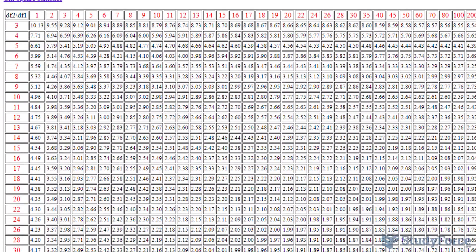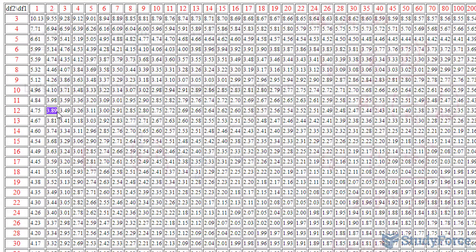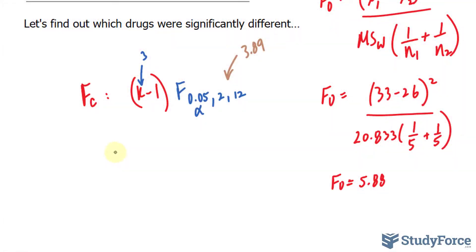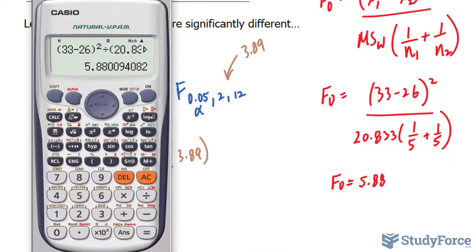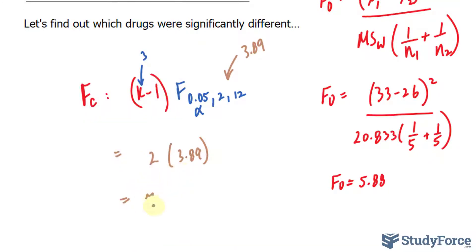So you have to find this number out in a table. And if you find it, it should be 3.89. So I take 3 minus 1, which is 2 times 3.89. Let's multiply 2 times 3.89 and we get 7.78.